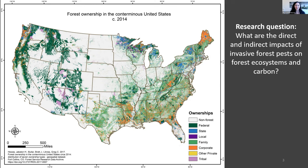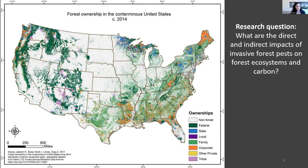When I say indirect impacts, what I'm actually talking about for the most part in the Northeastern forest is management — what is our management response to forest pests and how might that change? More than half of the forests in the Northeast are owned and managed by family forest owners, and you all know this very well.